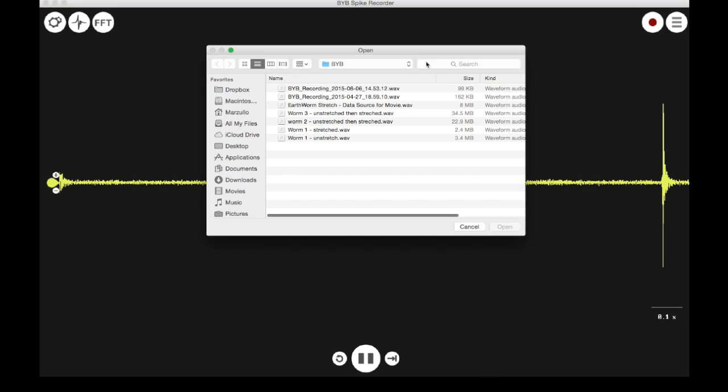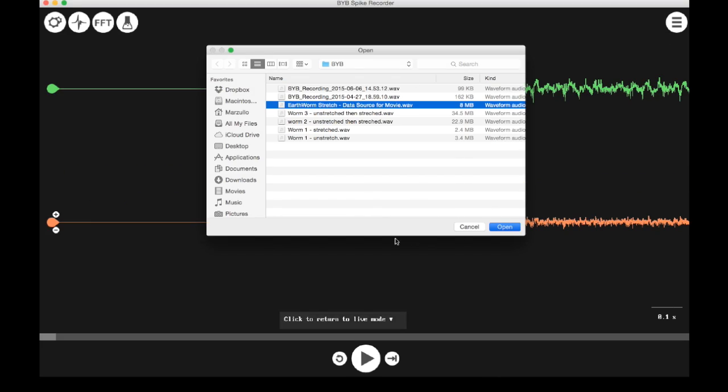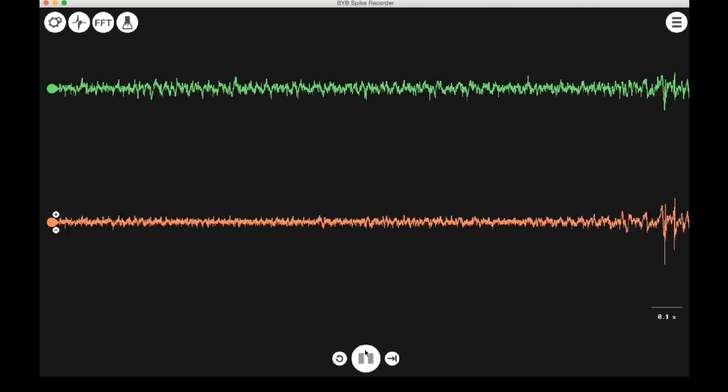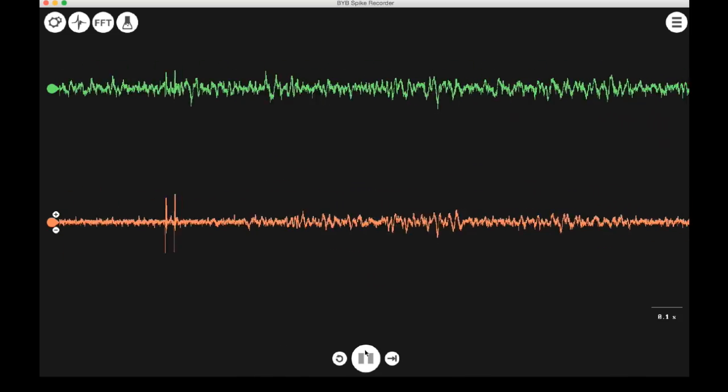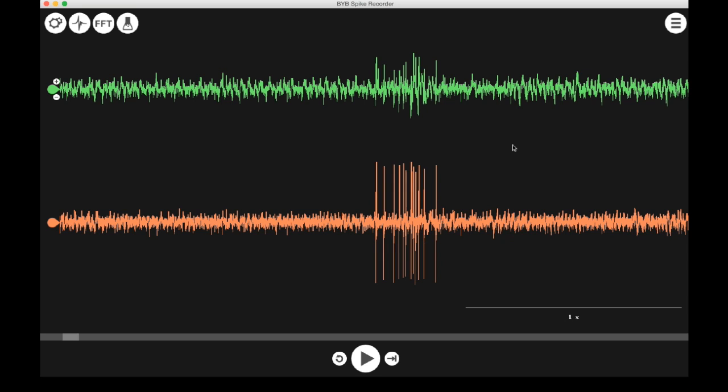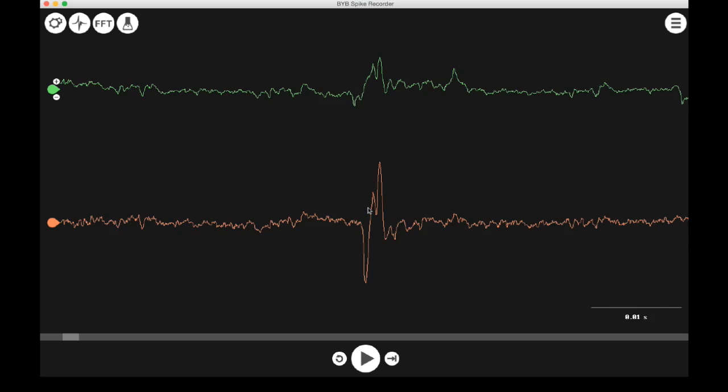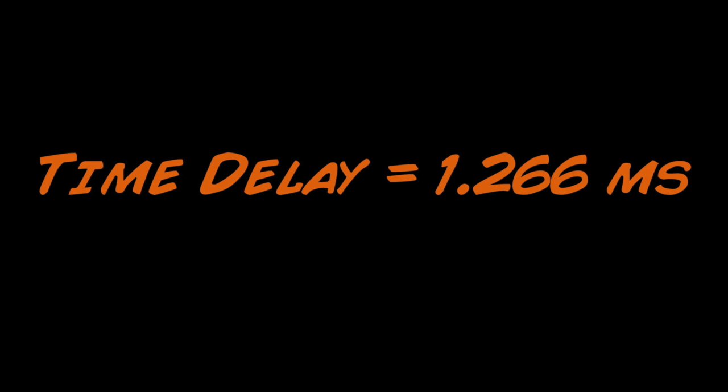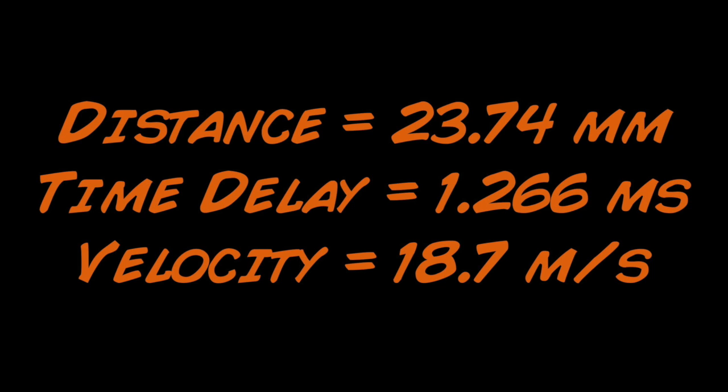We can open the previously recorded file to take a closer look at the data in this experiment. Now, with your scroll wheel or two-finger motion on your trackpad, you can zoom in on very fine time scale on the first evoked spike in the spike train. You will begin to see a time delay between the two channels. With your mouse cursor, you can measure the time difference between these two channels, and here we see it is 1.266 milliseconds. This time delay, of course, is the time it took for an action potential to travel between the two points along the nerve. Since we know the distance, we can calculate the velocity, and it turns out to be 18.7 meters per second.